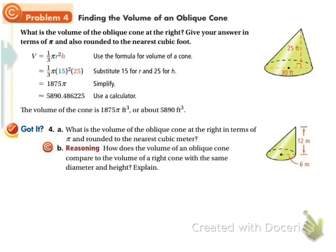All we need to do is to plug in. Our volume is, we'll use a special one again. 1 third pi r squared h. And they want it in terms of pi and rounded to the nearest cubic meter. Our radius is 6 and our height is 12.